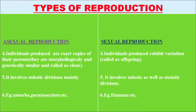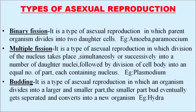What are the types of asexual reproduction? First, binary fission. Fission means breakage. In binary fission, it is a type of asexual reproduction in which the parent organism divides into two daughter cells. Examples are amoeba and paramecium. In multiple fission, it is a type of asexual reproduction in which division of the nucleus takes place simultaneously or successively into a number of daughter nuclei.